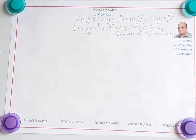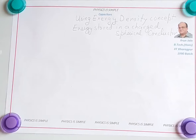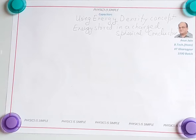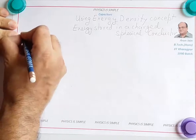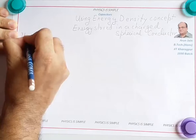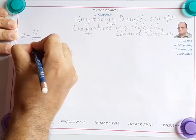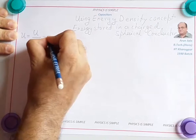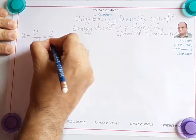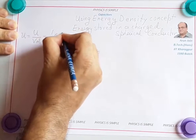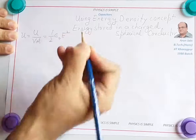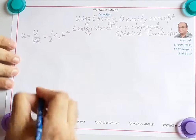In this lesson, we are going to find the energy stored in a charged spherical conductor using the concept of energy density. The energy density, or the energy per unit volume, is given by half epsilon naught E squared in the absence of a dielectric.